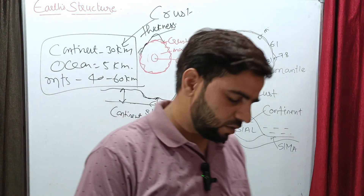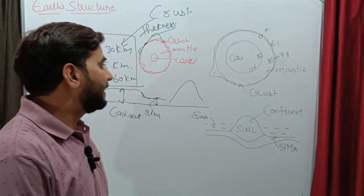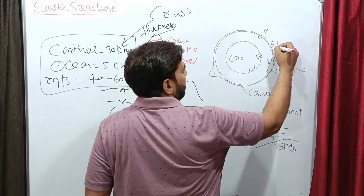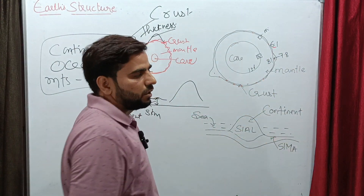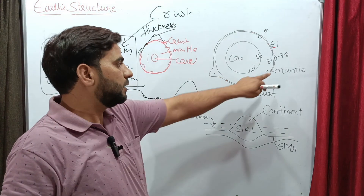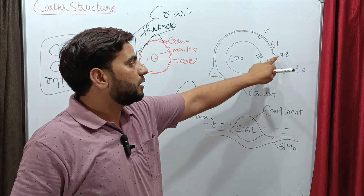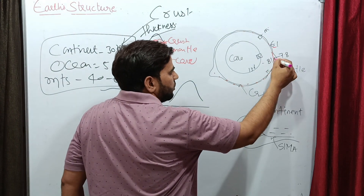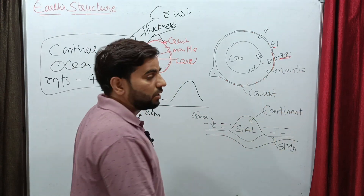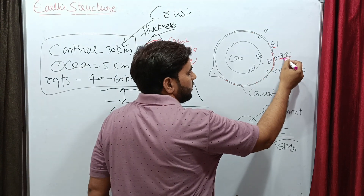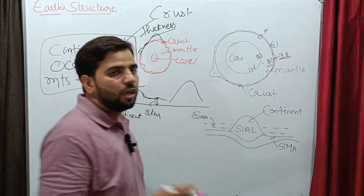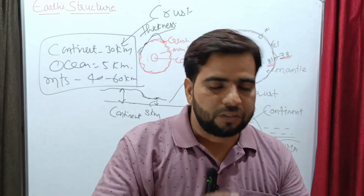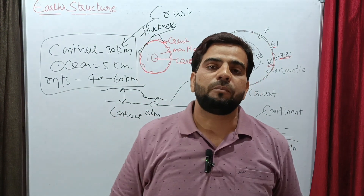Now let's look at the density of various layers. The density of the upper part of the Earth's crust is considered to be 6.1, and the lower part is 7.8. The boundary between the crust and the mantle — the mantle part — has a density of 8.1. So the density of the mantle is more in comparison to the crust, showing a clear variation in densities between crust and mantle.